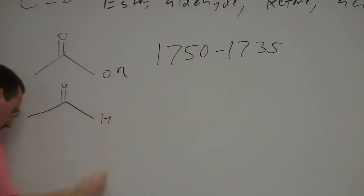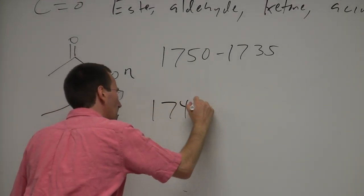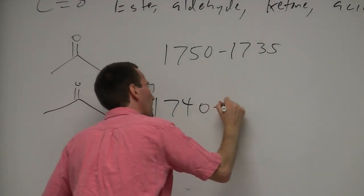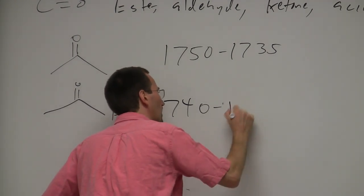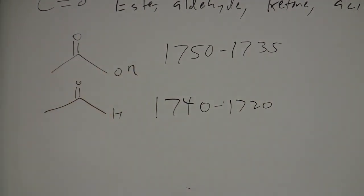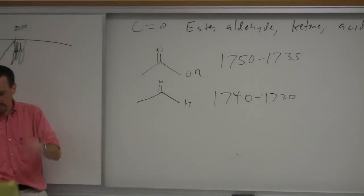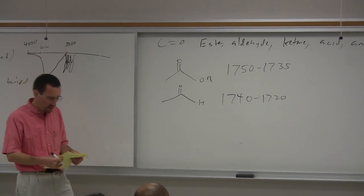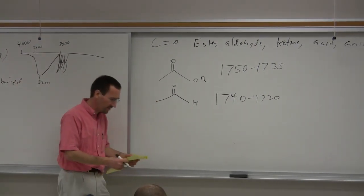Aldehydes in general: we're talking about 1,740 to 1,720 cm⁻¹. You can often pick out the CH stretch and the Fermi resonance if you look right on the edge of the region at about 2,820 and 2,720 cm⁻¹.